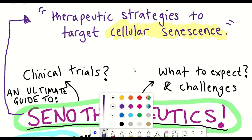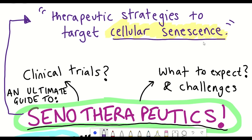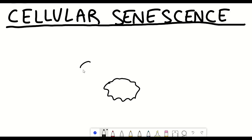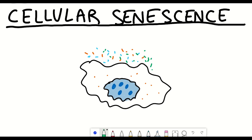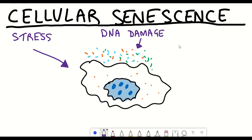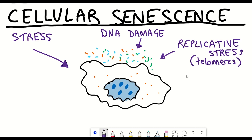The first concept you need to understand is what is cellular senescence and what are senescent cells. Cellular senescence is a cell state that occurs in response to a variety of different stresses — that could be DNA damage, replicative stress from replicating too many times and shortening telomeres, oxidative stress, or oncogenic activation.